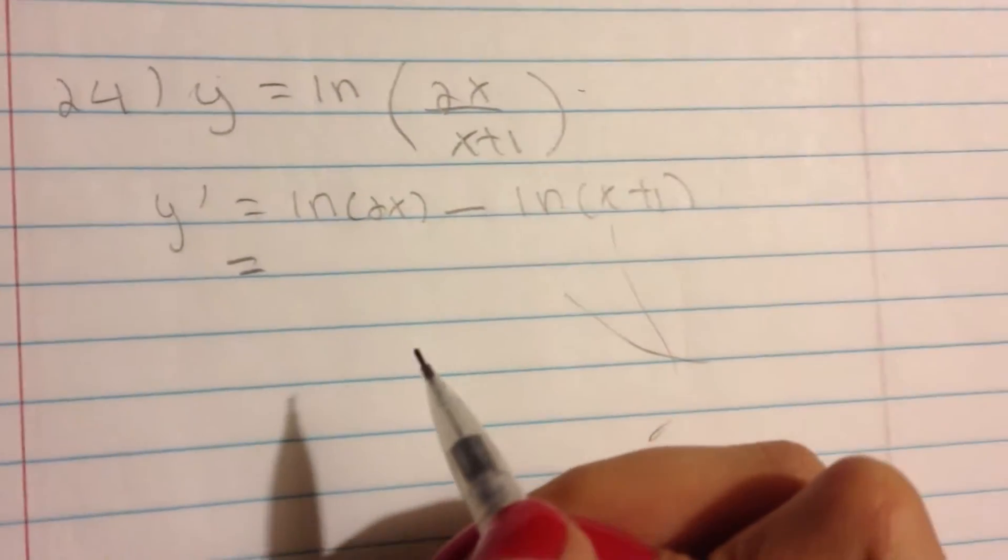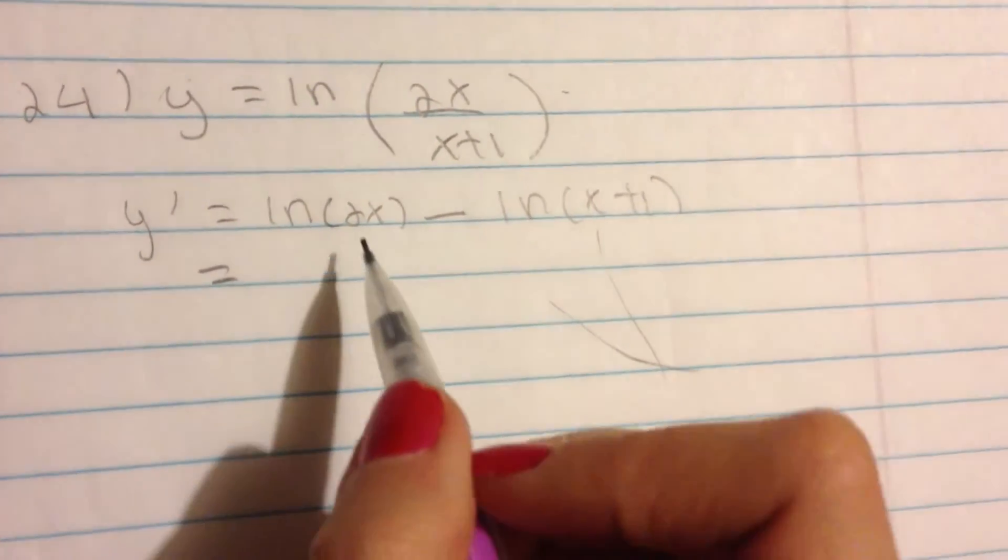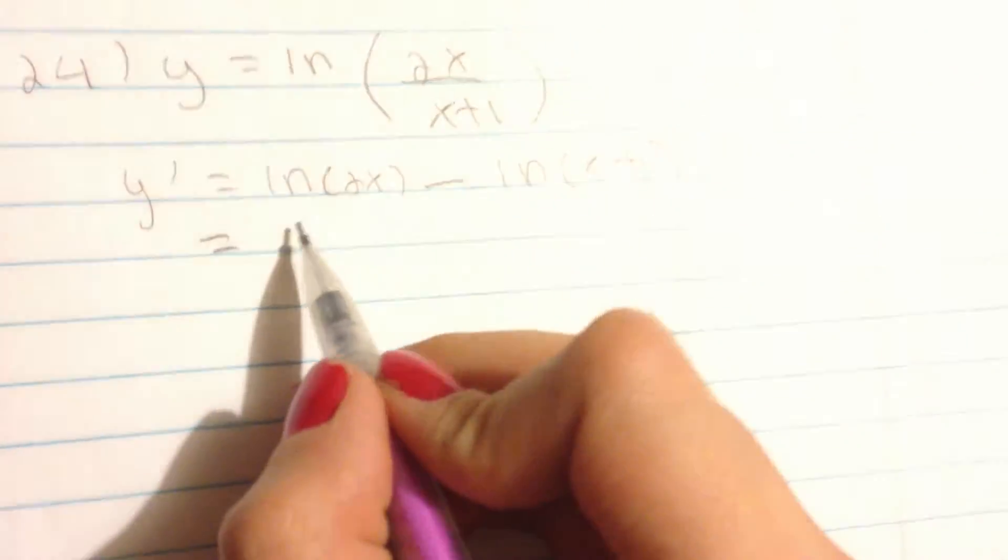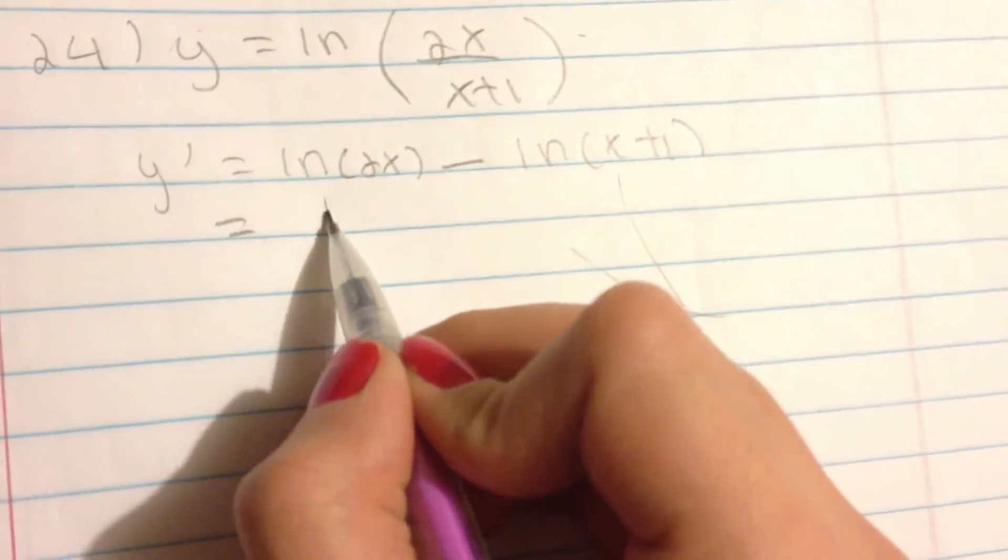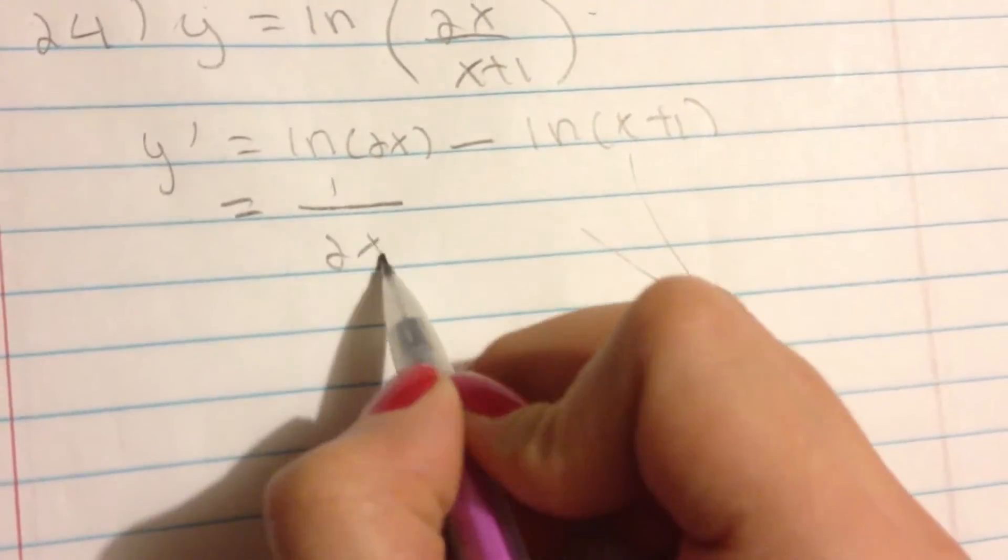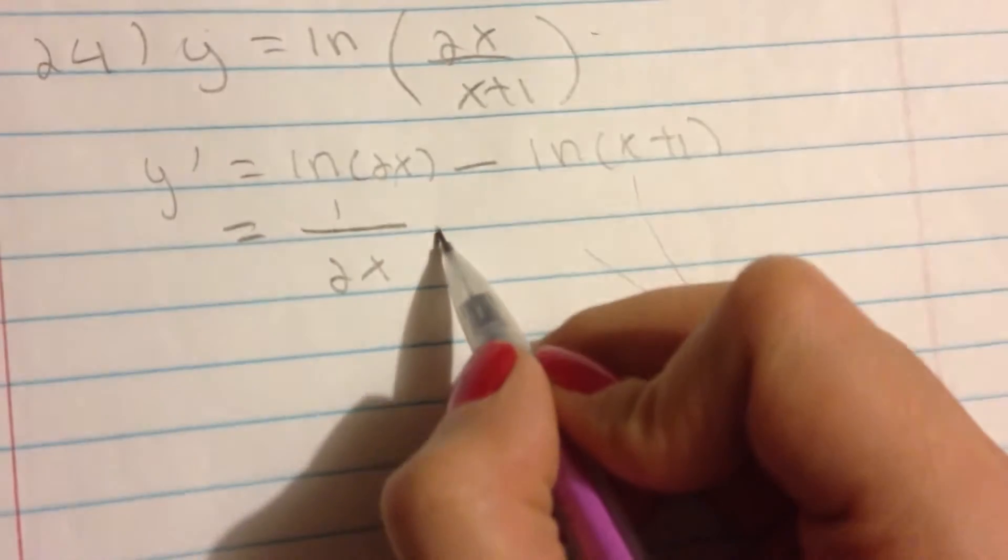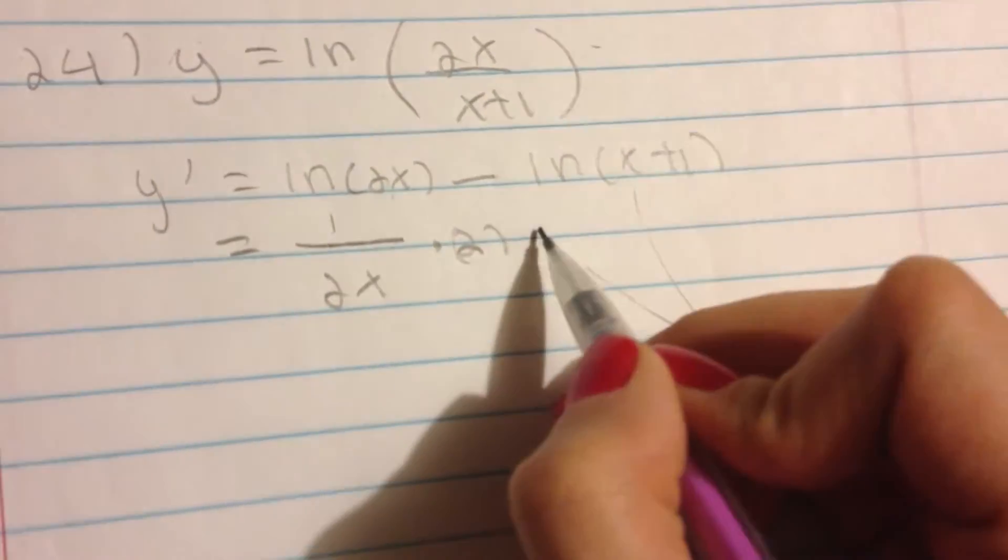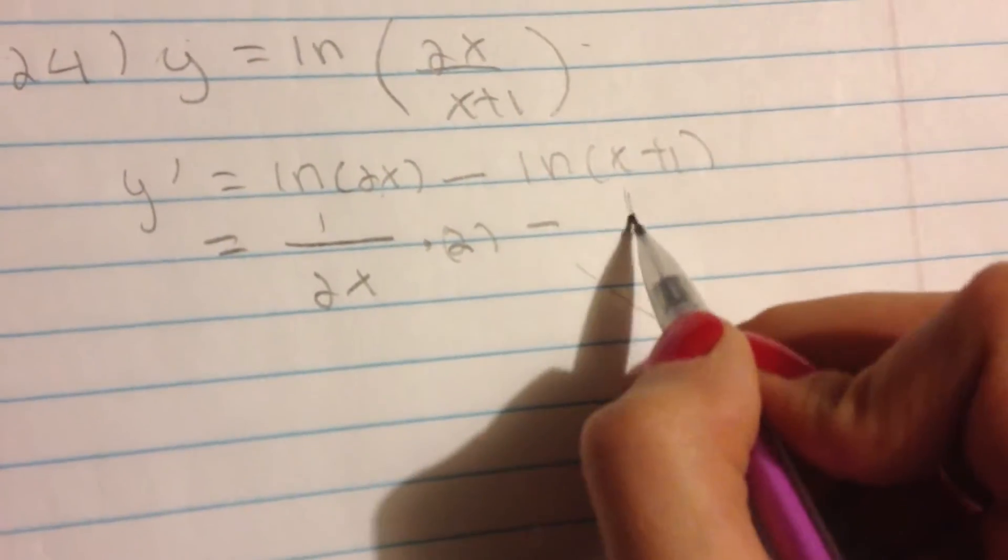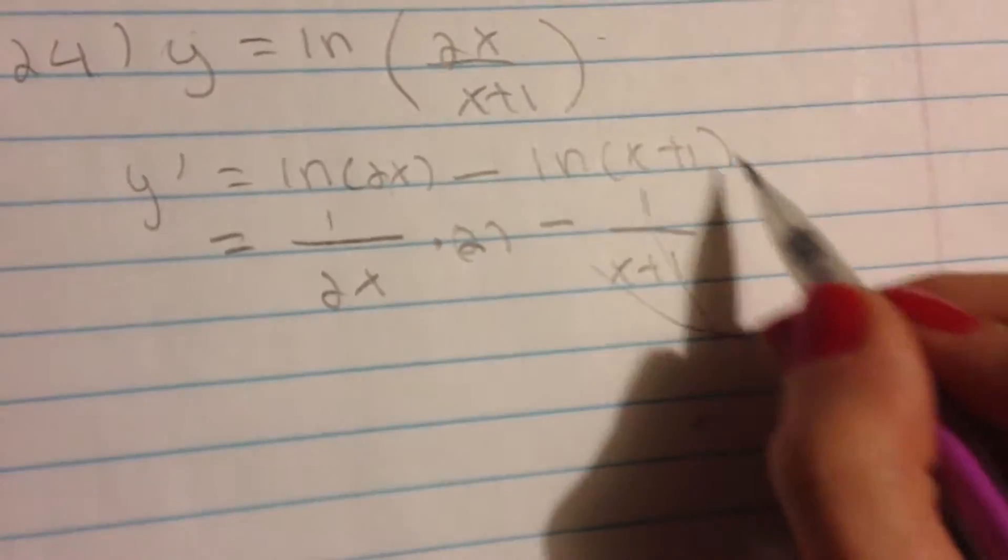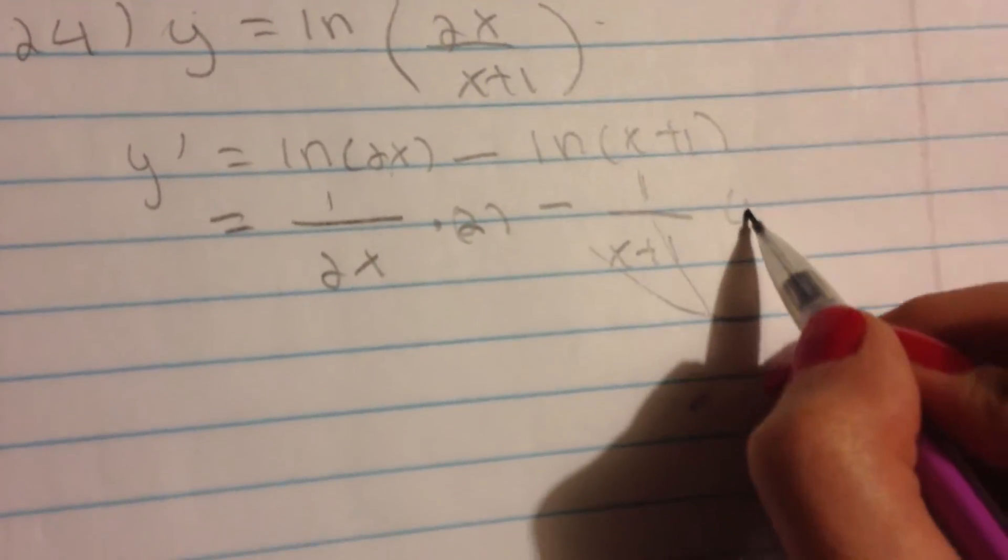Now what we have to do is we have to take the derivative of all of this. So the derivative of ln of 2x is 1 over 2x times the derivative of 2x, which is just 2, minus the derivative of this, which is 1 over x plus 1, times the derivative of x plus 1, which is just 1.